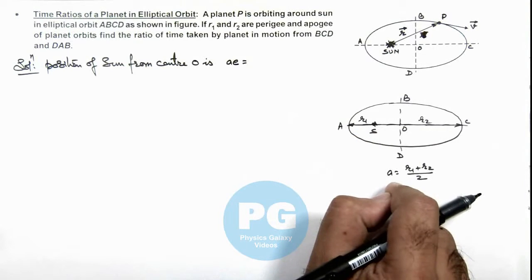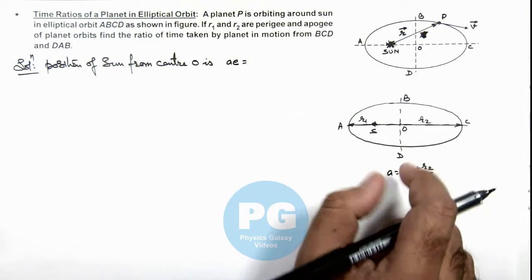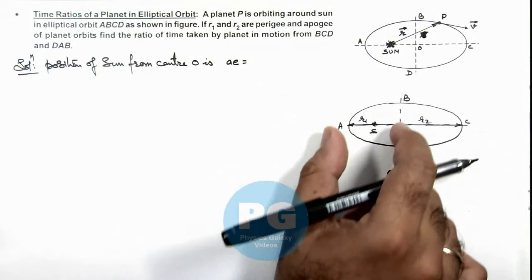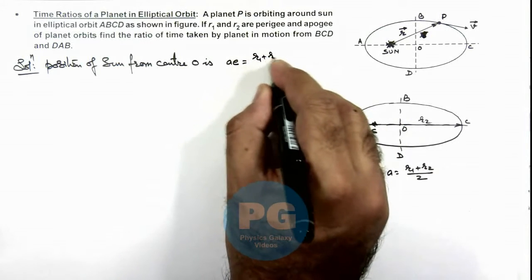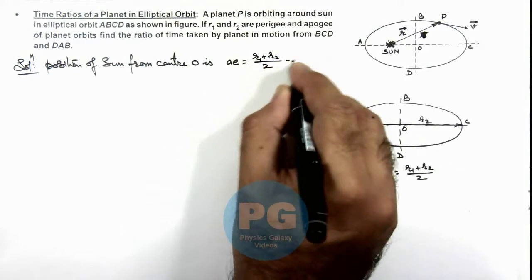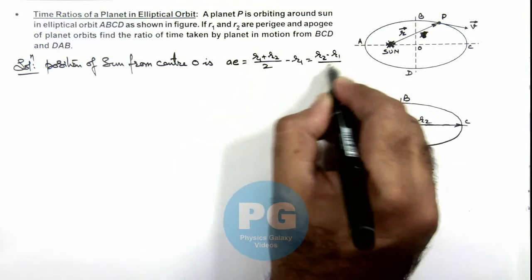So the value of a we are having is r1 plus r2 by 2. So this total distance ae we can write as r1 plus r2 by 2 minus r1, or which is equal to r2 minus r1 by 2.